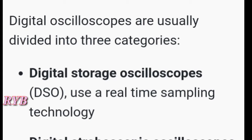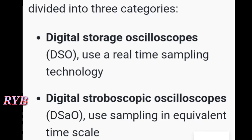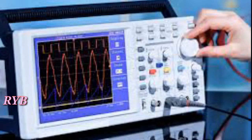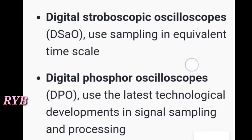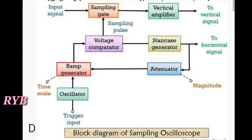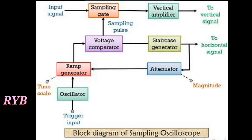Digital oscilloscopes can be divided into three categories. The first is digital storage oscilloscopes (DSO), which use real-time sampling technology. The second is digital stroboscopic oscilloscopes, which use sampling in an equivalent time scale. The third category is digital phosphor oscilloscopes (DPO), which use the latest technological developments in signal sampling and processing.